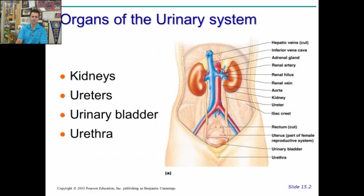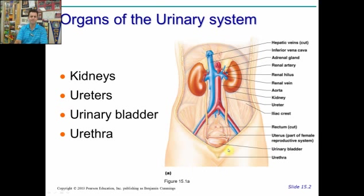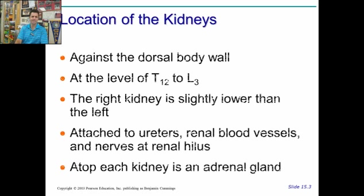Let's look at the organs. We have the two kidneys on either side — they're called kidneys because they look like kidney beans. They're attached to ureters on either side, and those ureters run to a urinary bladder down at the bottom. The urinary bladder is attached to a urethra in both males and females; the male urethra is much longer. And that's how the urine is excreted.